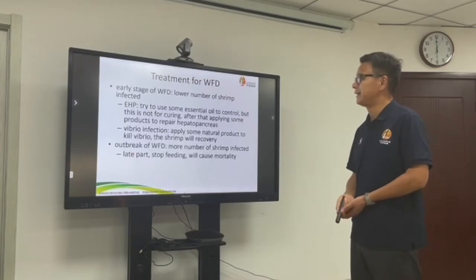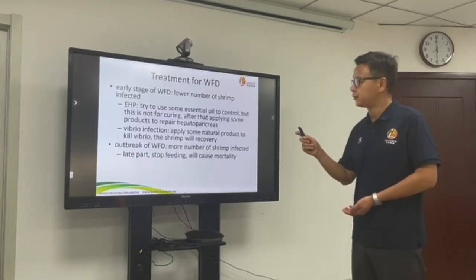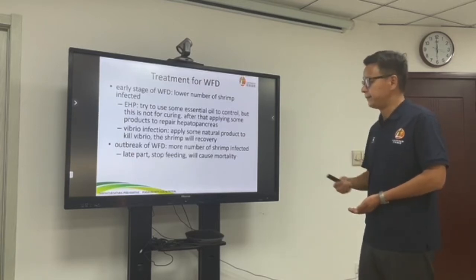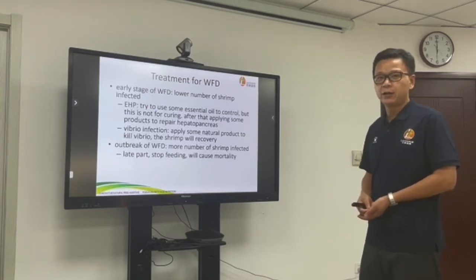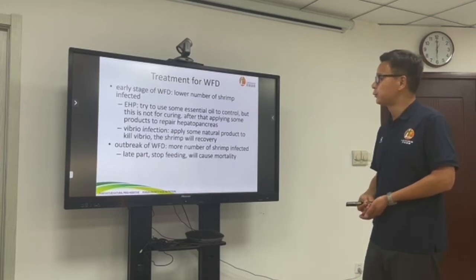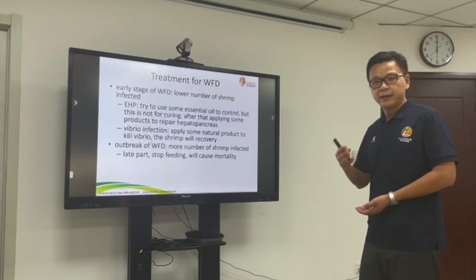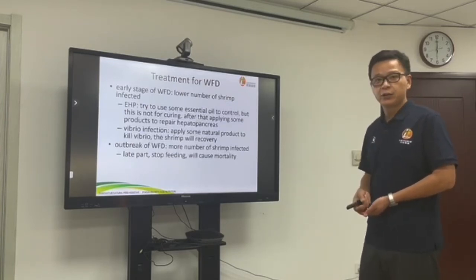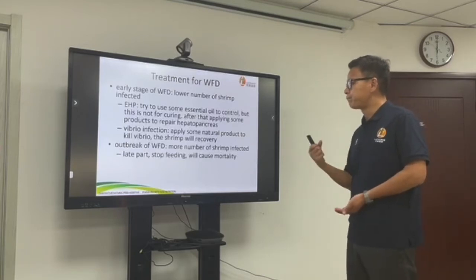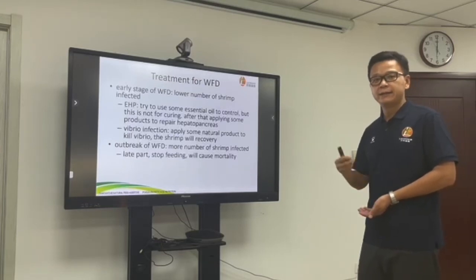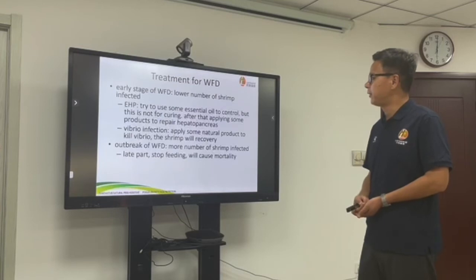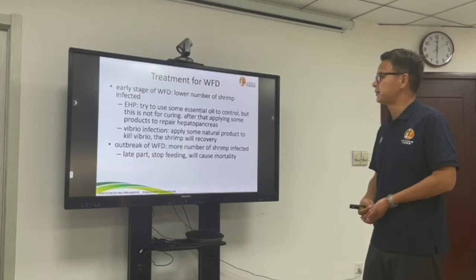For treatment, it's very important to monitor your shrimp daily. Once you find whitefish shrimp at the beginning — maybe just a few — you must find out the reason. Is it due to EHP, Vibrio, or Brutosome? If it's EHP, add some essential oil to control the EHP numbers. EHP lives inside the cell, so it's very difficult to eliminate — we can only control it, not cure it. You can use essential oil and then add products that can properly repair the shrimp hepatopancreas, like organic acids or herbal extracts and other feed additives.